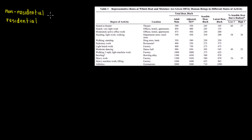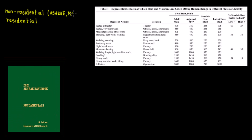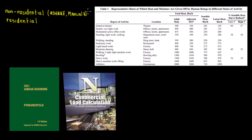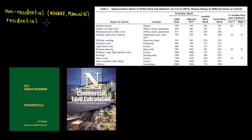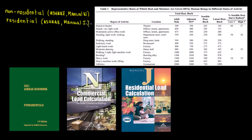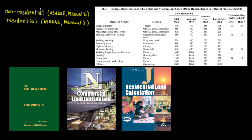Number two comes the heat loads. For a non-residential building you have different methods: you can resort to ASHRAE Fundamentals, or you can check Manual N for light commercial from ACCA. For residential, the same — ASHRAE Fundamentals and Manual J from ACCA.